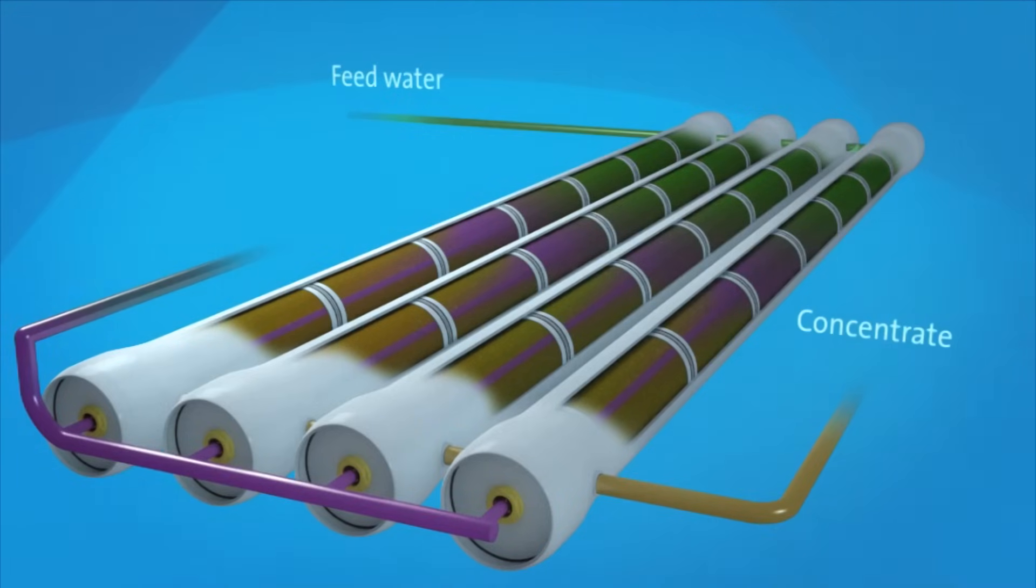The final recycled water product is collected from the end of the elements. The concentrate, or reject, from that vessel flows to another stage, producing more recycled water.